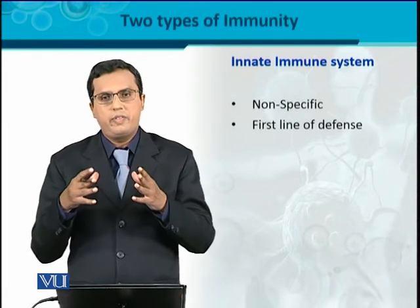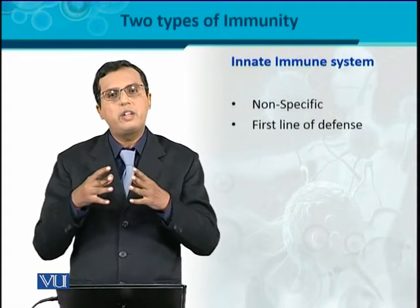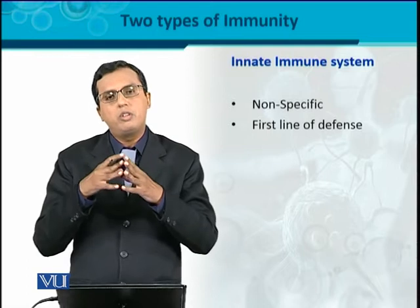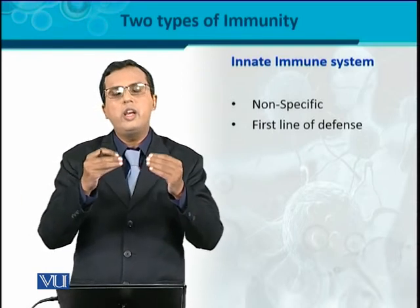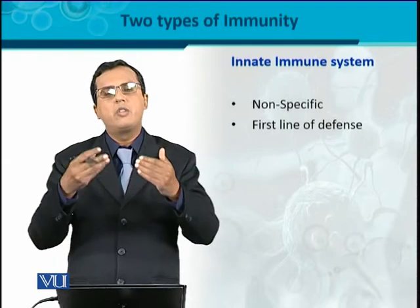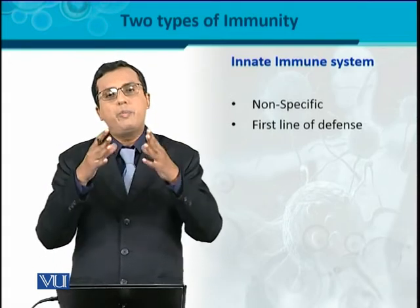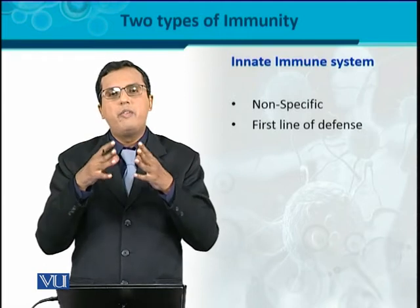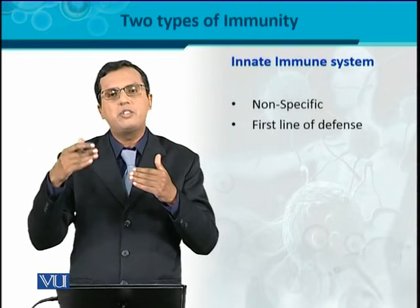The innate immune system is the first line of defense. By birth, this system is already there. When this system is available, it serves as the first line of defense. Just like when you go from one place to another, there is a security check — the main entrance of a university represents that first security check, which is the first line of defense.